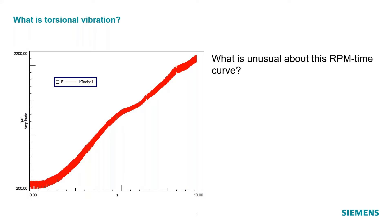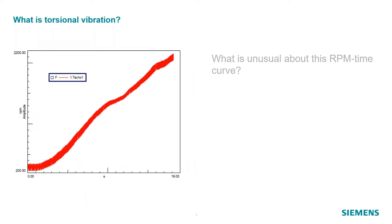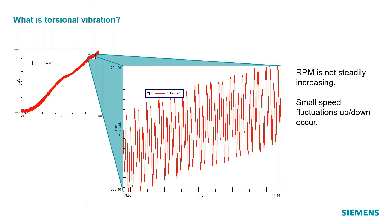So what is torsional vibration? If I showed you an RPM versus time curve, we're measuring the speed of some rotating component over the course of 19 seconds or so, and we see the speed is increasing. But what is a little unusual about this curve? If you look at it, it's kind of what I would call hairy. And if we zoom in on the RPM trace, we see there are actually these up and down speed fluctuations, where the RPM isn't just a steady increasing number — it's actually oscillating about some mean value. And that's what torsional vibration is: speed fluctuations up and down of a rotating component.